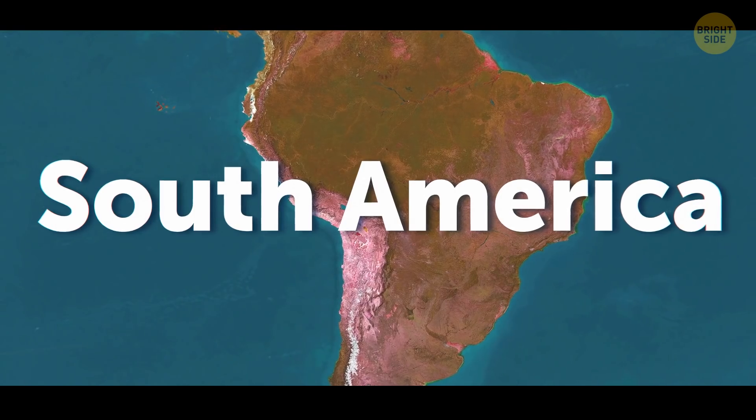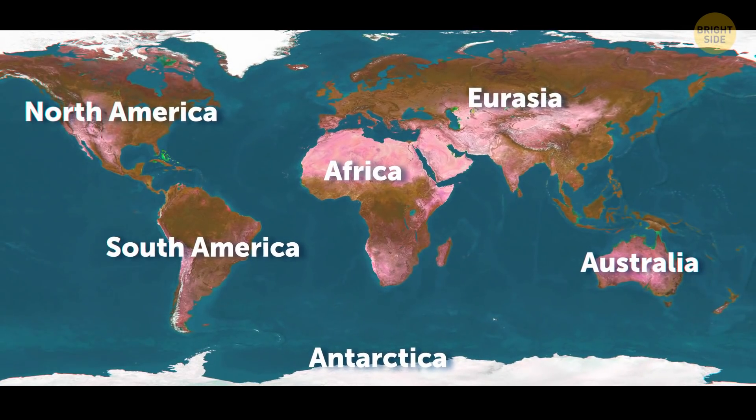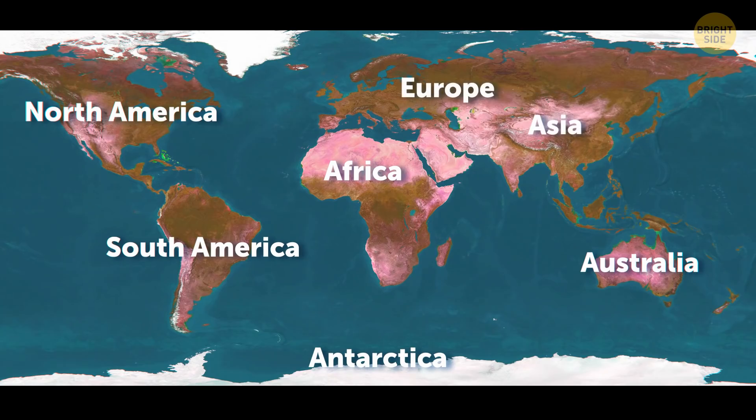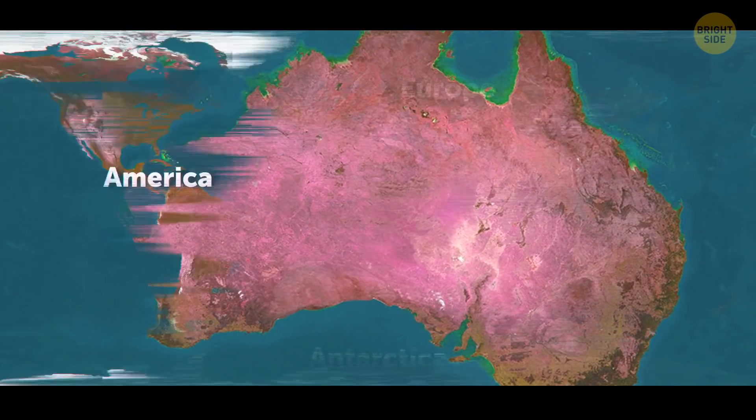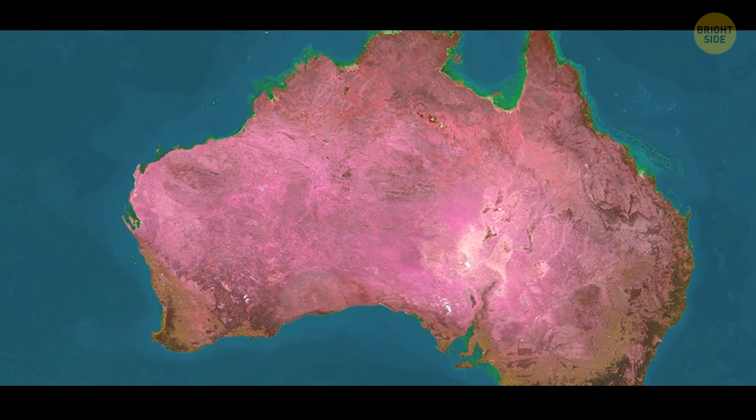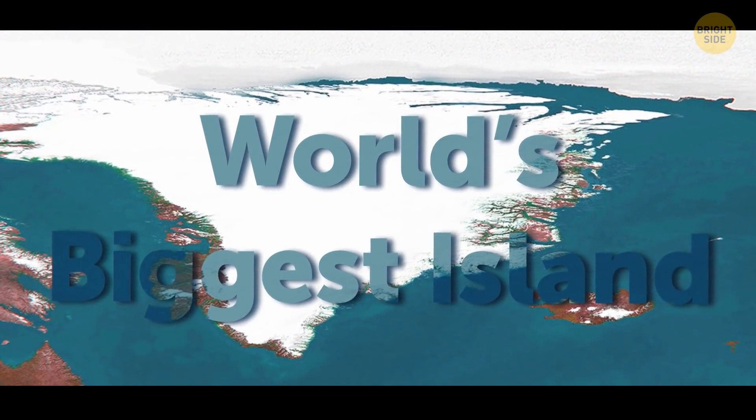European school kids, however, combine Europe and Asia into Eurasia, so they only learn six continents. South Americans also recognize six, but they keep Europe and Asia separate and combine North and South America instead. What's even stranger is that everyone seems to agree that Australia is a continent, while Greenland isn't, and has to make do with the title of world's biggest island.